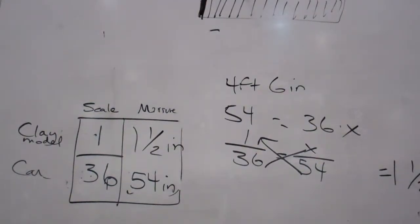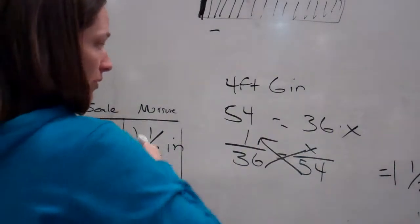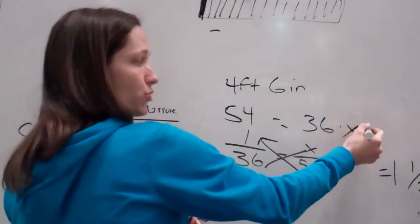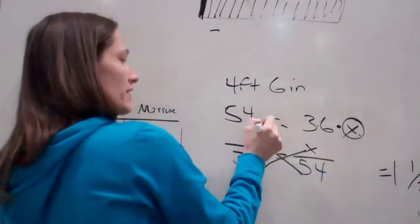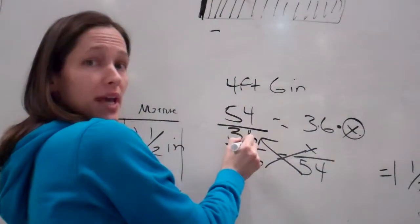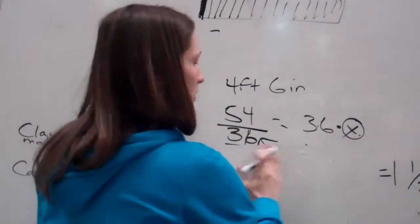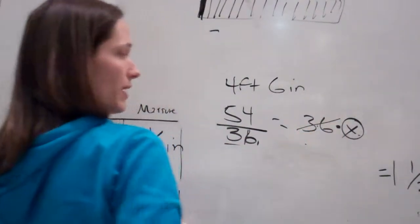Would you do 54 divided by 36? Yes, it would be, what it would end up being is, since it says 36 times x, we're trying to get x by itself. So, since it says times 36, we're going to divide by 36. Remember that?